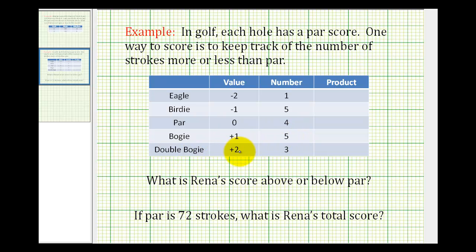And then a double bogey is two strokes more than par, which has a value of positive two or plus two, and she had three of those.